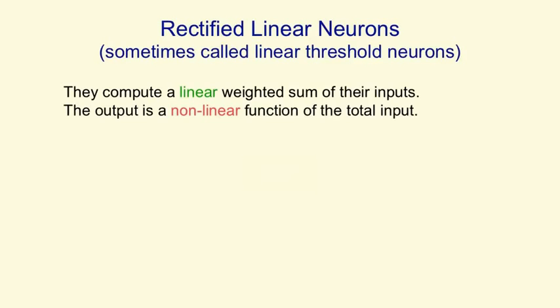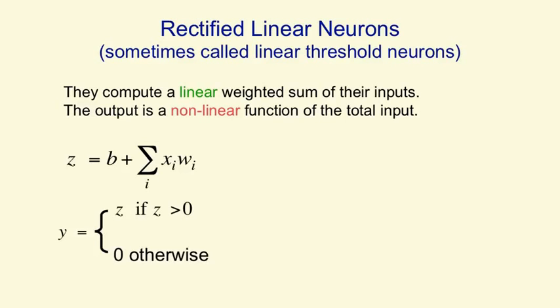A kind of neuron that combines the properties of both linear neurons and binary threshold neurons is a rectified linear neuron. It first computes a linear weighted sum of its inputs, but then it gives an output that's a non-linear function of this weighted sum. So we compute z in the same way as before.